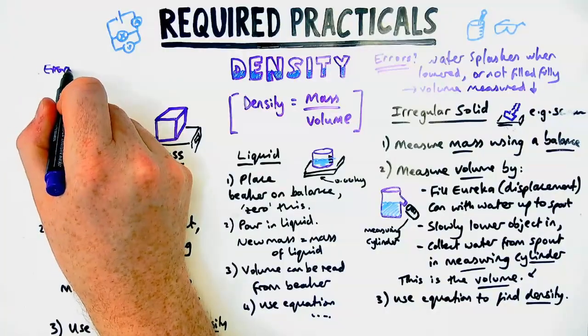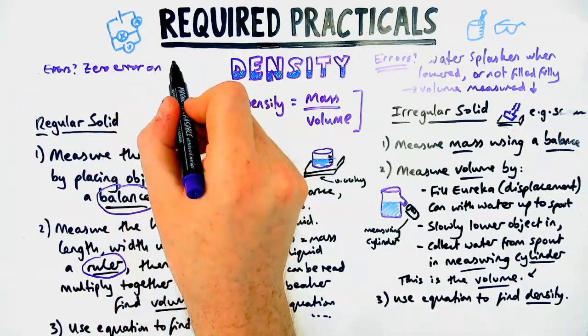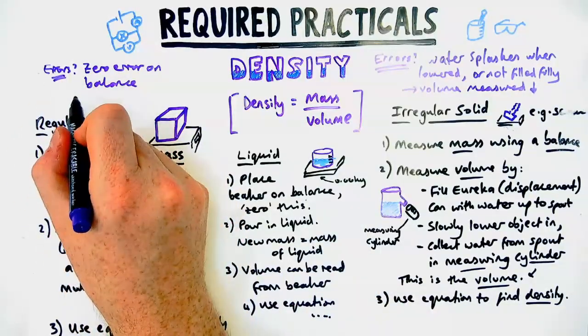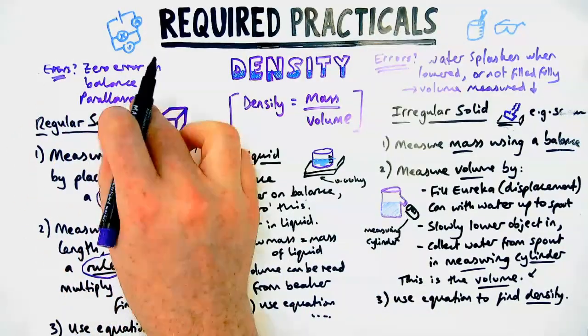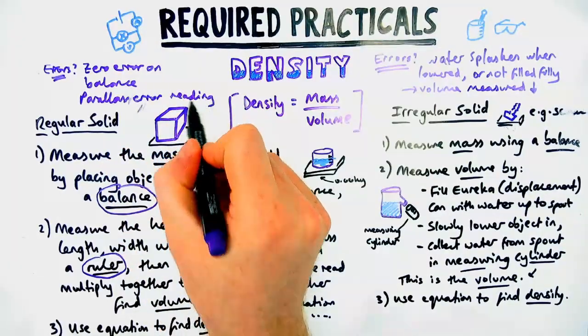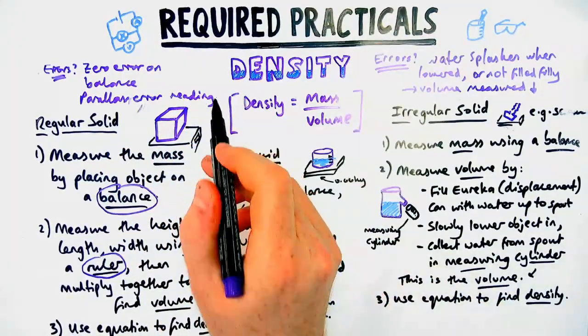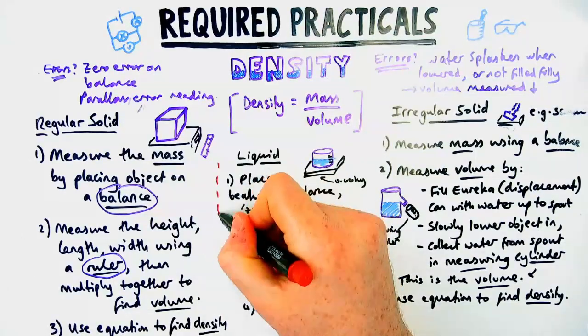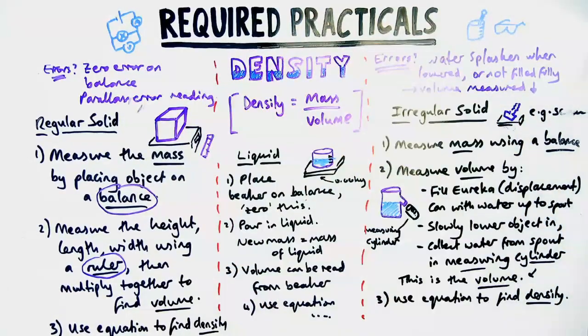You could also have, when measuring the mass of the solid or liquid, a zero error on the balance. You could also have something called a parallax error, only for the regular solid when you're reading using a ruler, or with the measuring cylinder when you are reading the volume. Check out my other video if you're not sure what parallax error is.